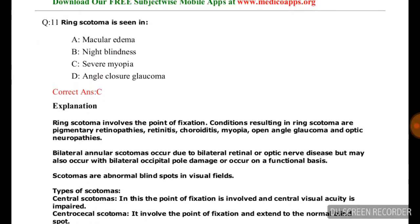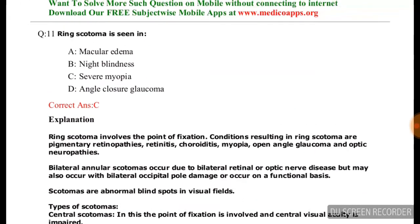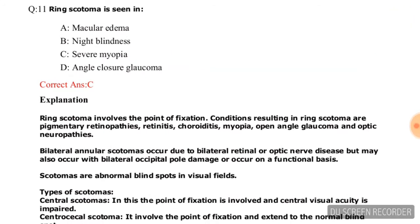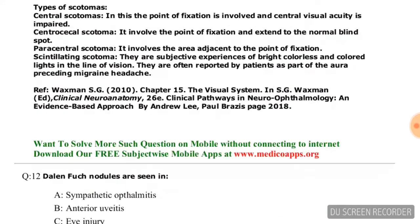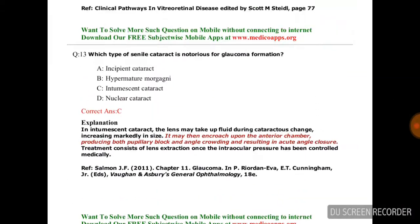Question number ten: Ring scotoma is seen in which condition? Options are macular edema, night blindness, severe myopia, and angle closure glaucoma. The correct answer is severe myopia — ring scotoma is seen in severe myopia.